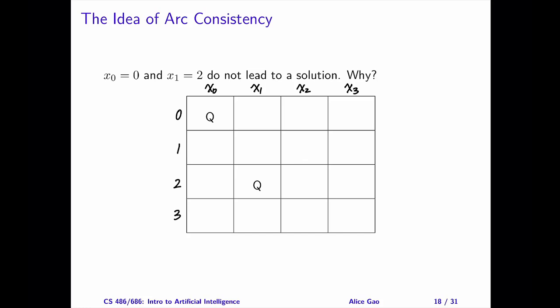What if we try to put queen x1 in row 2? How can we figure out that this assignment does not lead to a solution? Since queen x0 is in row 0, we cannot put any queen in the top row. We also cannot put any queen in this diagonal.